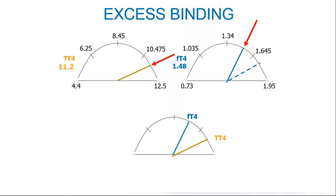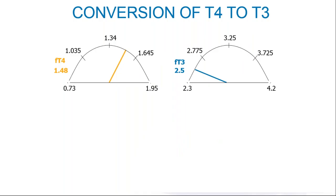You can also compare total T3 to free T3 to assess binding, but only if the patient is not on therapy — once on thyroid therapy, the total T3 normal range is no longer accurate and will confuse the picture. So I've cut total T3 out and just use total T4. Now let's look at conversion: T4 to T3 conversion occurs peripherally from free T4 to free T3, so we compare those two free levels.